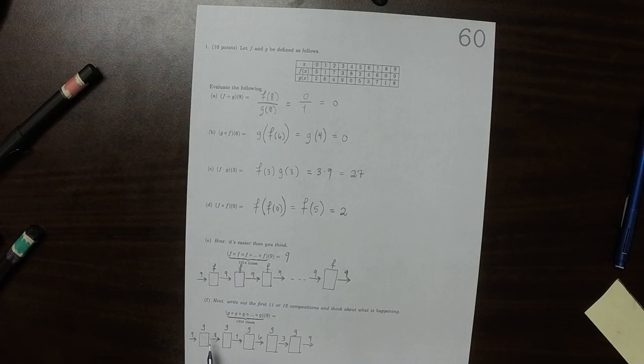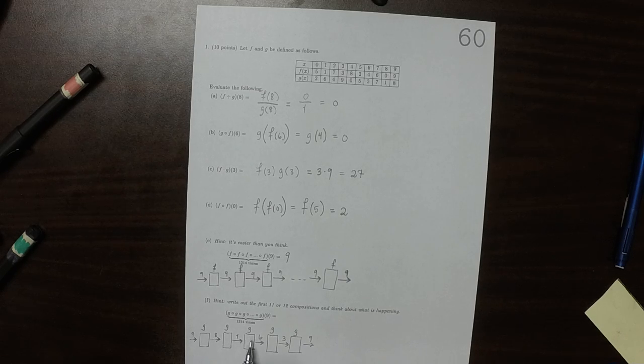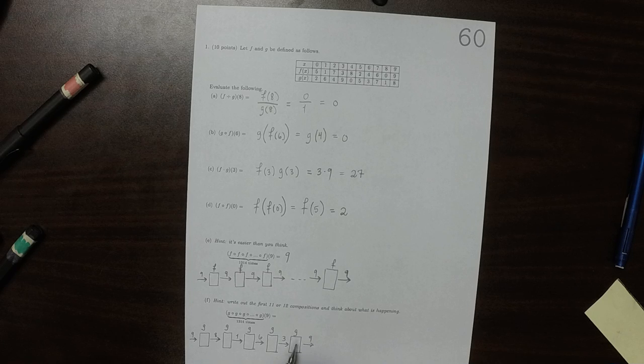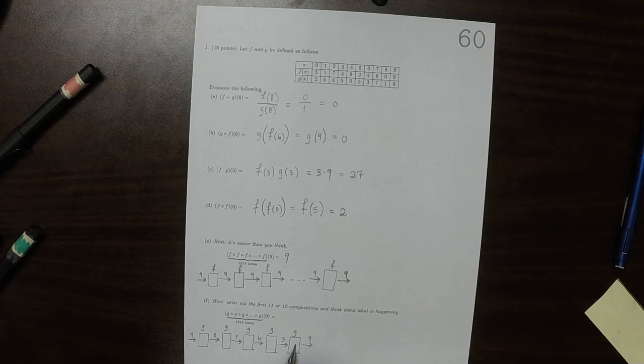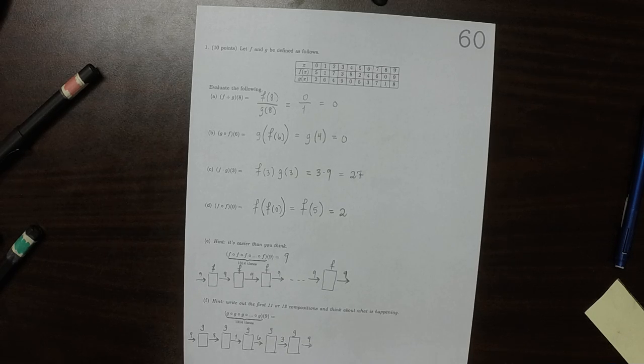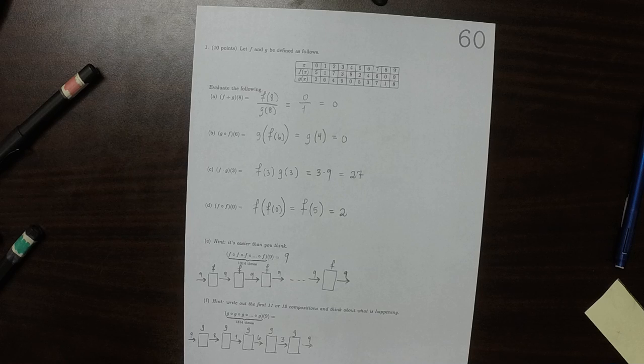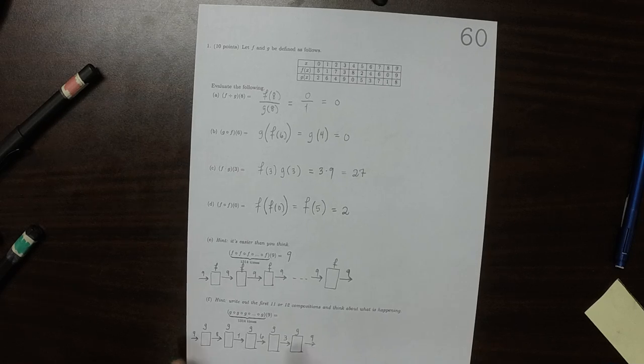So now what I want you to observe is that after 1, 2, 3, 4, 5, we get a 9 again. So putting 1, 2, 3, 4, 5 g's in a row is the same as having done nothing.